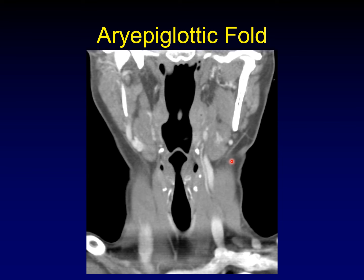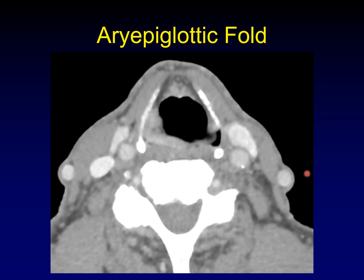The aryepiglottic folds drape over the sides of the epiglottis and extend down towards the arytenoid cartilages. They separate the larynx from the piriform sinus of the hypopharynx. So here's our epiglottis, and this tissue extending down on either side is the aryepiglottic fold, headed towards the arytenoid cartilages. Here's a tumor infiltrating into the aryepiglottic fold — you can see how thick it is on one side compared to the other, abnormally enhancing. The piriform sinus on the affected side has become compressed by the mass effect from the tumor.